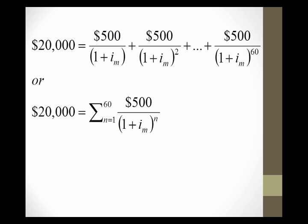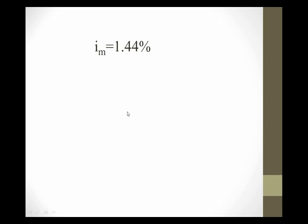From there we can annualize it and calculate an annual rate. Using summation notation, for 60 months — 12 months a year over five years — we'll be making payments of $500. If we discount that to the present so that it equals $20,000, that gives us our monthly interest rate. In Excel it's very simple to calculate this. If we calculate the monthly interest rate we're going to get 1.44%. Let's confirm that in our spreadsheet.